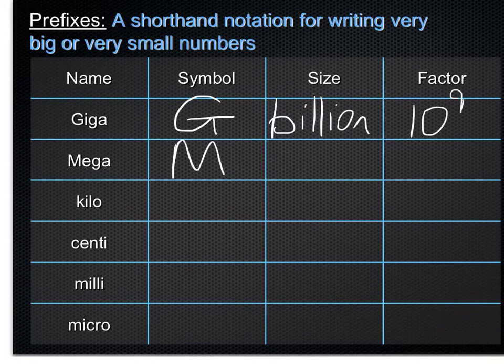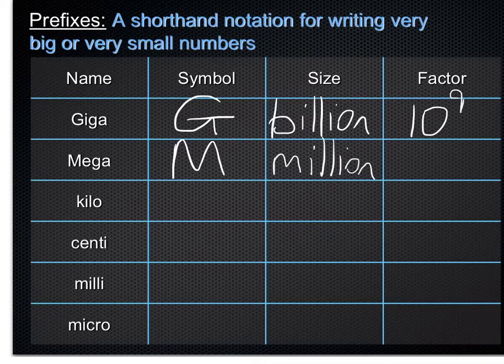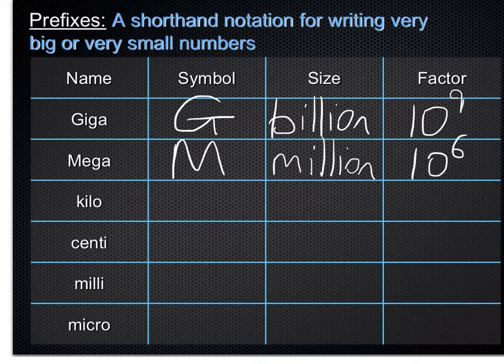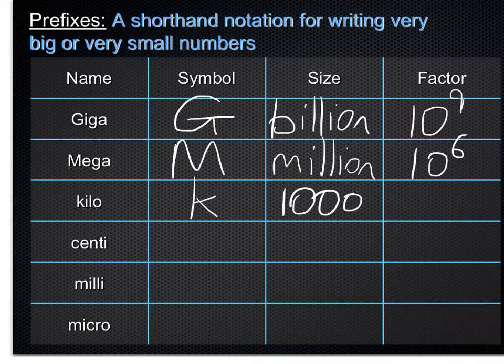Mega, capital M. That's a million. So if I have a megabyte, I have a million bytes. 10 to the power of 6 is the factor. Kilo, you're familiar with already, with kilogram. The size is 1,000. And that's 10 to the 3, as a factor.